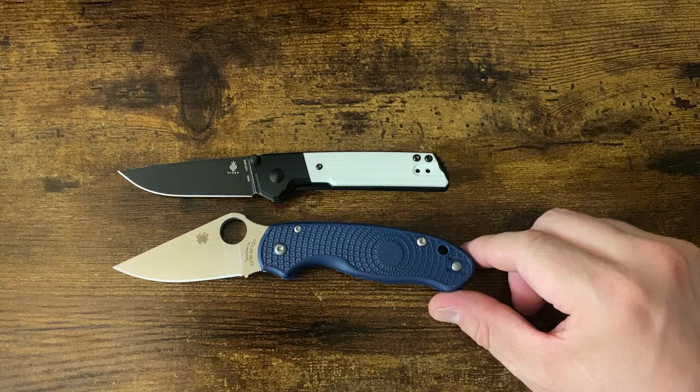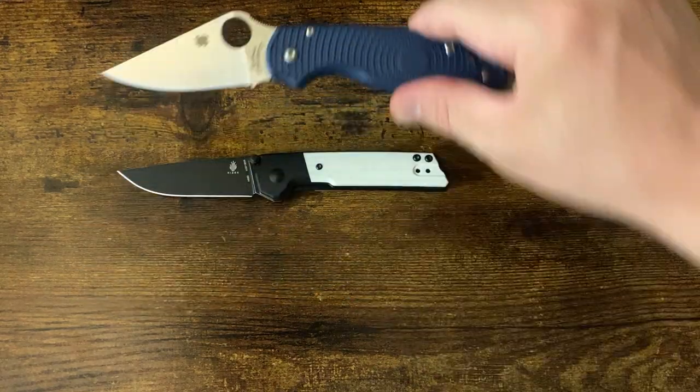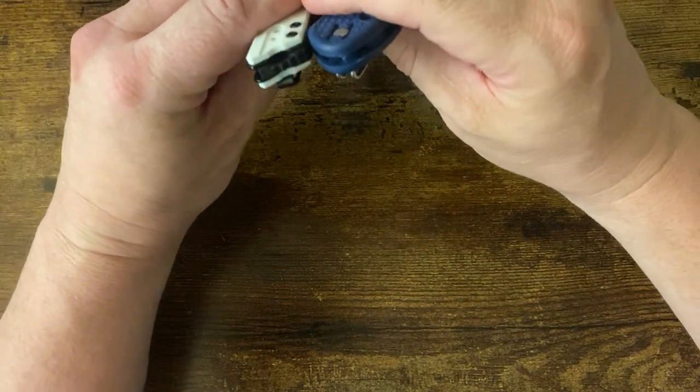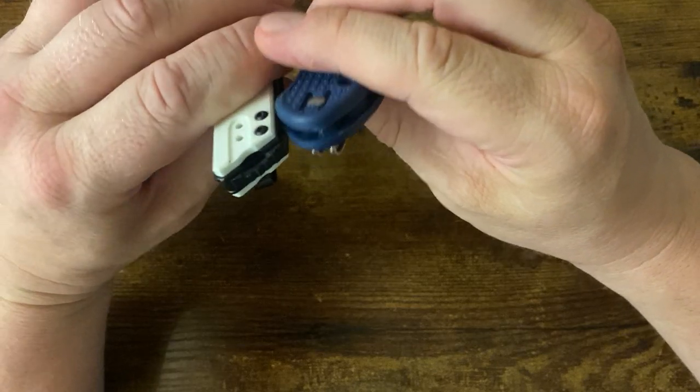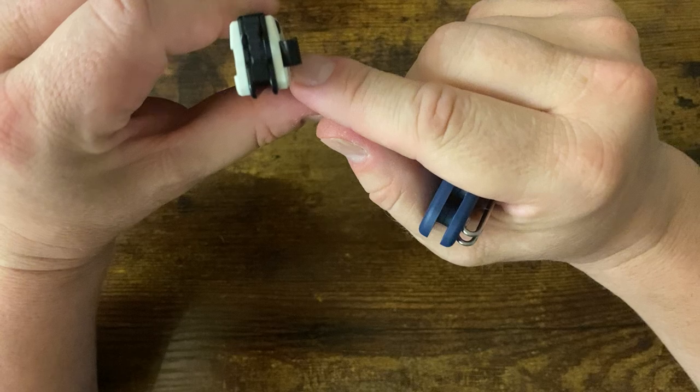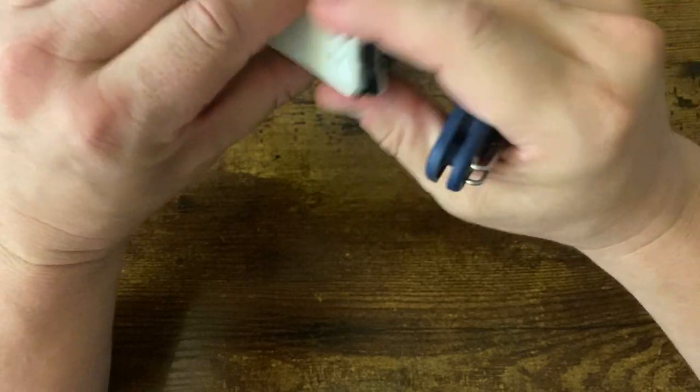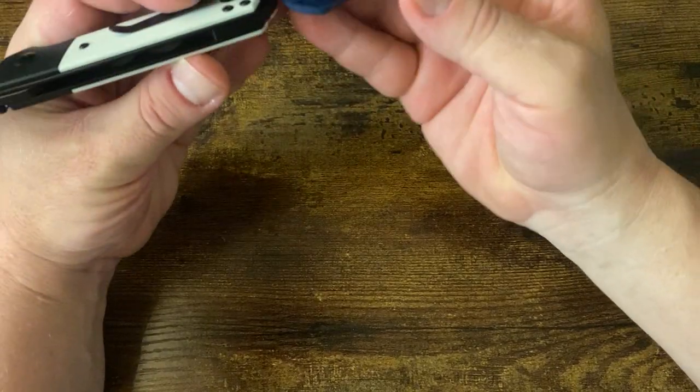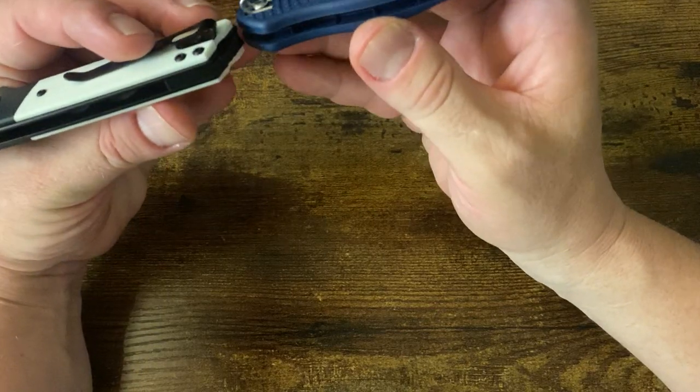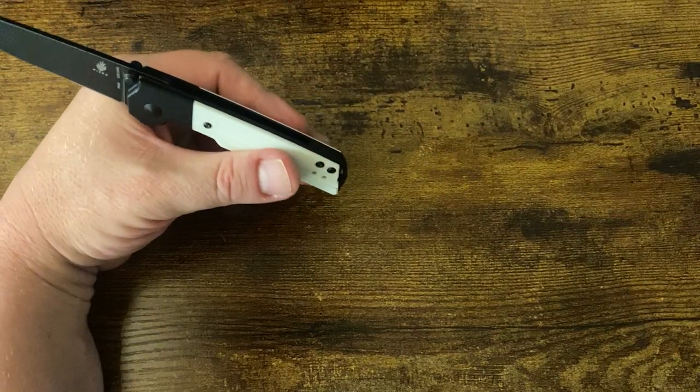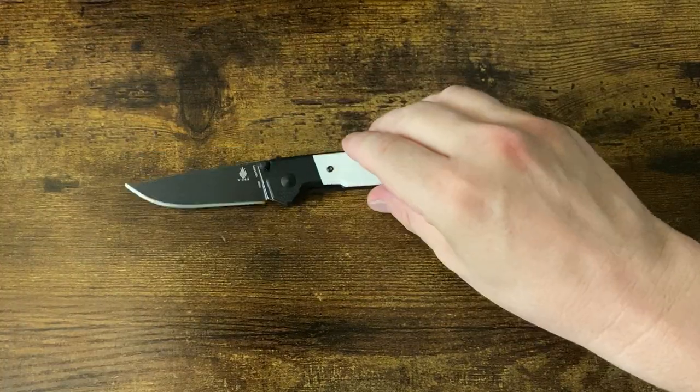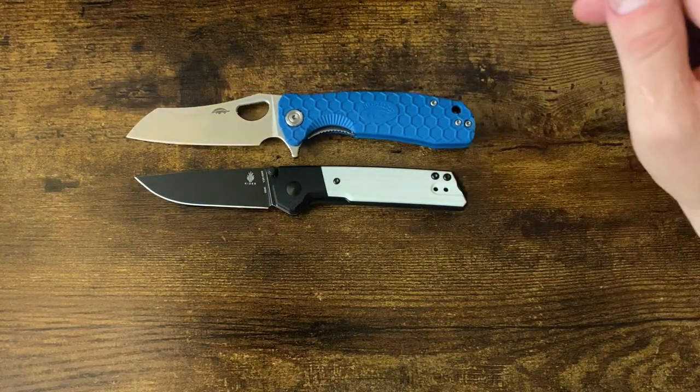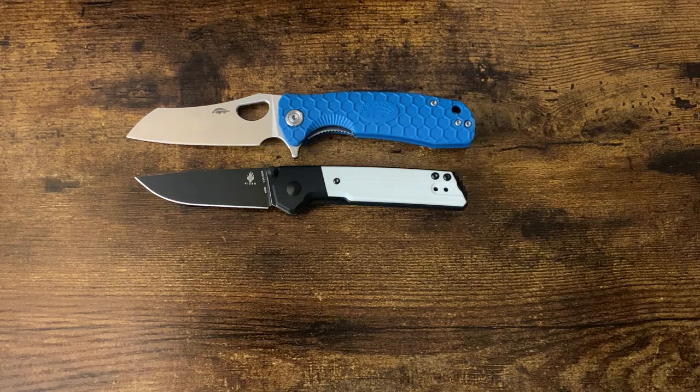Here is the Spy 27 Para 3. The Para 3, though not much longer, dwarfs it in almost every other respect except for thickness. There is some contouring to this handle. It is thicker on the bottom than the top. When you start looking at it, this sucker is a beefy one. One more size comparison, that is with the Honey Badger Medium in D2 with the Warn Cleaver.